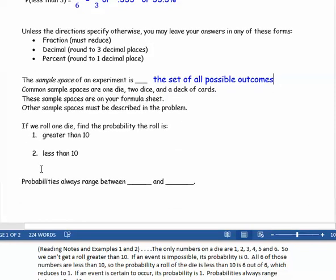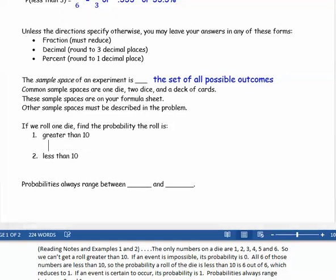So examples one and two. If we roll one die, find the probability the roll is, first, greater than ten. Well, the only numbers on a die are 1, 2, 3, 4, 5, and 6. So we can't get a roll that's greater than ten. It's impossible. Well, if an event is impossible, then its probability is zero.